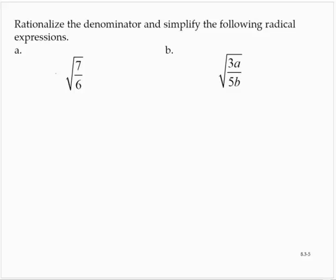Rationalize the denominator and simplify the following radical expressions. So we have the square root of 7 over 6.